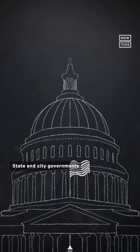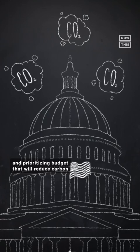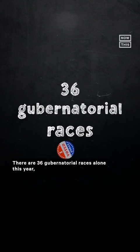State and city governments have a crucial role in combating the climate crisis, enacting policies and prioritizing budget that will reduce carbon output and strengthen protections for the environment. There are 36 gubernatorial races alone this year, in addition to the countless other state and local offices up for grabs.